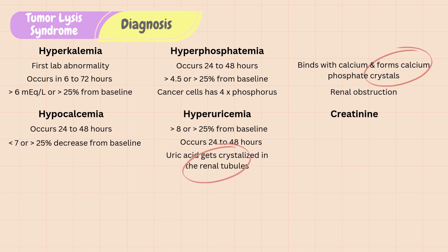Creatinine is another lab to monitor for TLS. It is defined as creatinine of 1.5 times the upper limit of normal. However, this is a limited assessment for those with chronic kidney disease, as they often have a high creatinine at baseline.